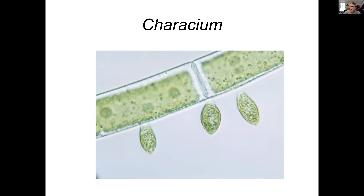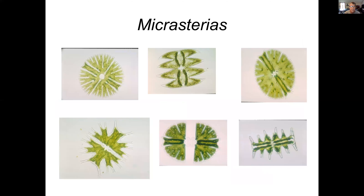Closterium here happens to be growing on Cladophora — it's an epiphyte on another alga. And in one genus there's a lot of variation: Micrasterias. The one at the bottom center is dividing into two new cells.